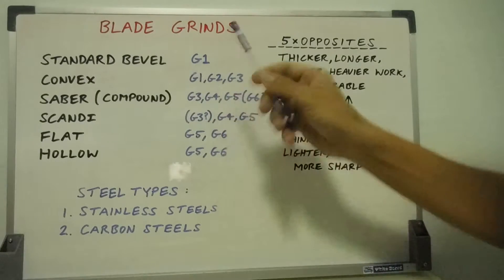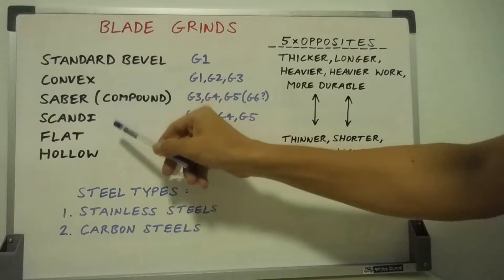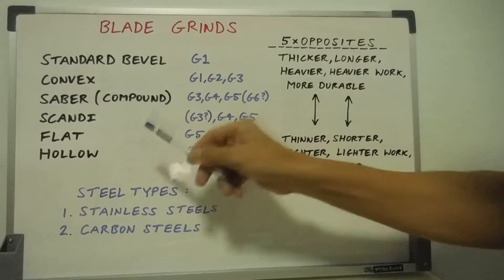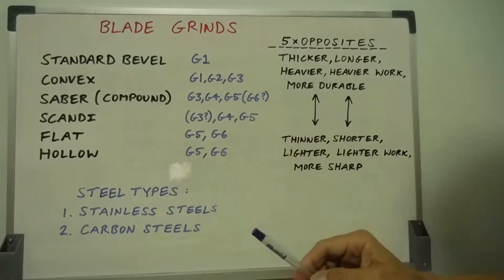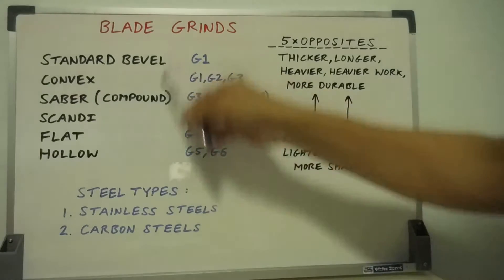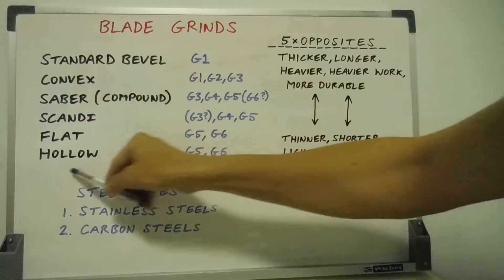Now let's look at different blade grinds and my blade groups that they are most suited to. I'm looking at six main, more important grinds that pretty much covers my six blade groups. Of course there are more grinds. So what we're going to look at is my six main grinds from standard bevel, from the most durable to the most sharp.